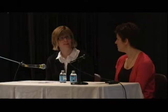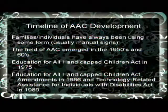Families and individuals have always been using some form of AAC — usually some manual signs. We can even remember with our grandparents who had deaf brothers and sisters that they had their own set of signs to communicate with each other. But the field of AAC really emerged in the 1950s and 60s. And then with each successive act, like the Education for All Handicapped Children Act, AAC became more prevalent, especially the 1997 amendments that specifically targeted AAC. So it has a relatively brief history in the whole scheme of things.